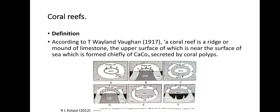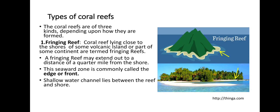Coral reefs can be classified in different ways — for example by which group of animal is involved. But here we are classifying based on how they are formed. There are three types: the first is fringing reef, the second is barrier reef, and the third is atoll. We will see each one by one.